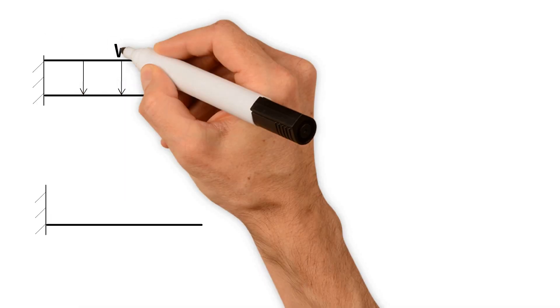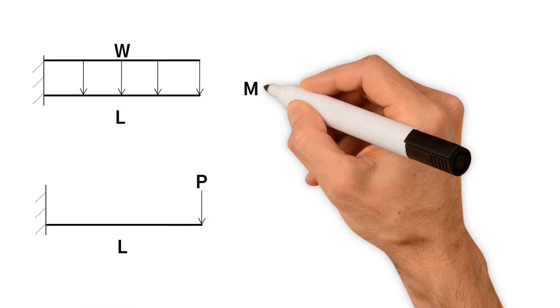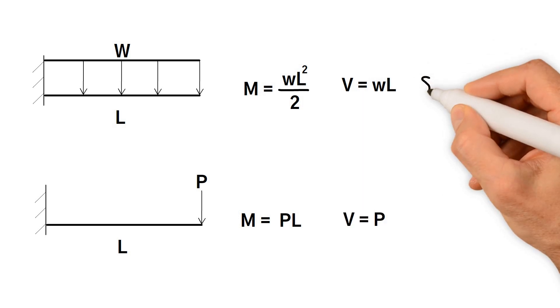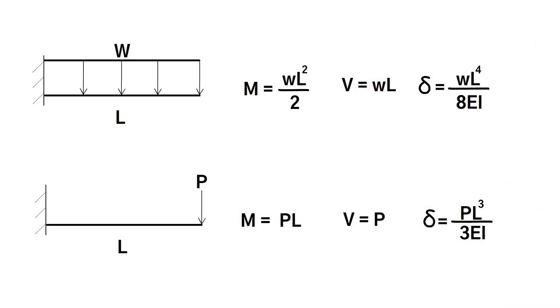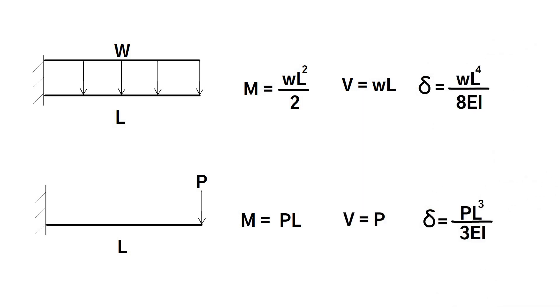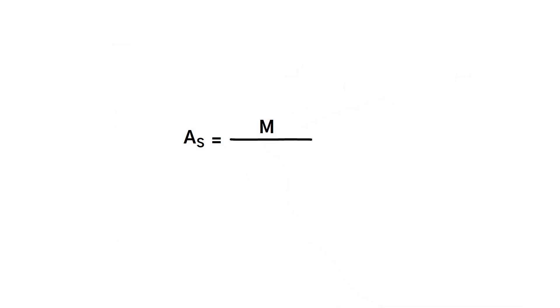Cantilever structures — knowing these two equations is essential, and they are commonly found in balcony designs.